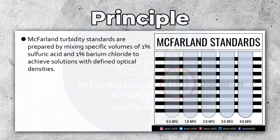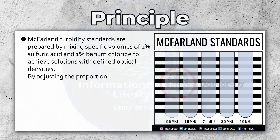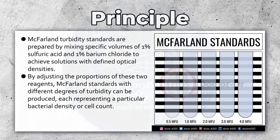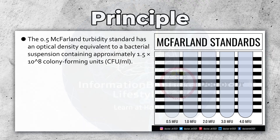McFarland Turbidity Standards are prepared by mixing specific volumes of 1% sulfuric acid and 1% barium chloride to achieve solutions with defined optical densities. By adjusting the proportions of these two reagents, McFarland Standards with different degrees of turbidity can be produced, each representing a particular bacterial density or cell count. The 0.5 McFarland Turbidity Standard has an optical density equivalent to a bacterial suspension containing approximately 1.5 × 10⁸ colony-forming units per milliliter.